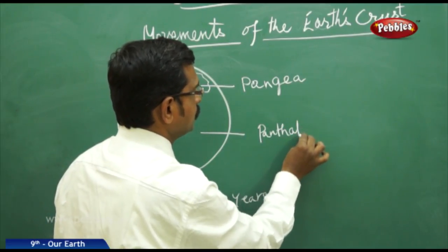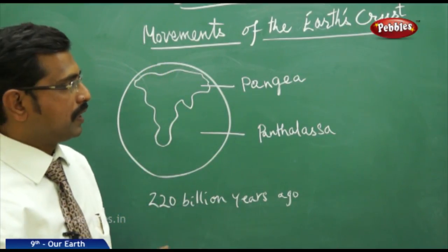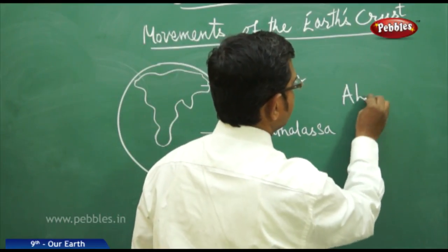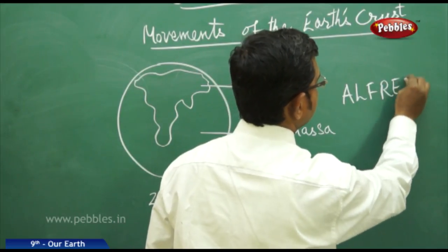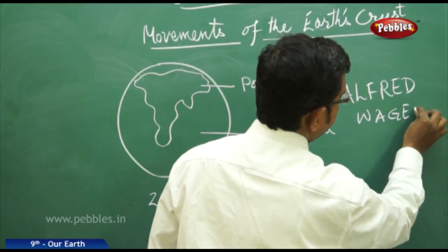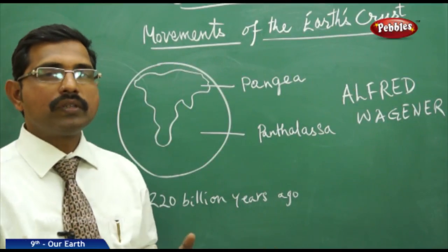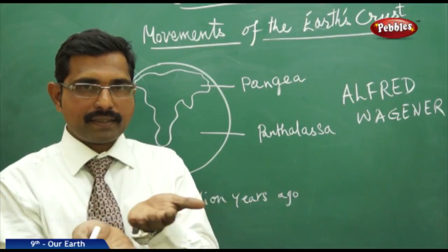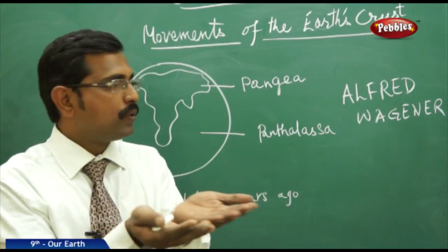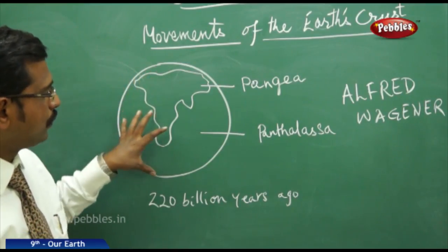This was explained by Alfred Wegener, who is a meteorologist and geophysicist. He explained the theory of continental drift. Continental drift means the land plates collide with each other and also move. This is the continental drift theory he explained — the land and the only water around 220 billion years ago.